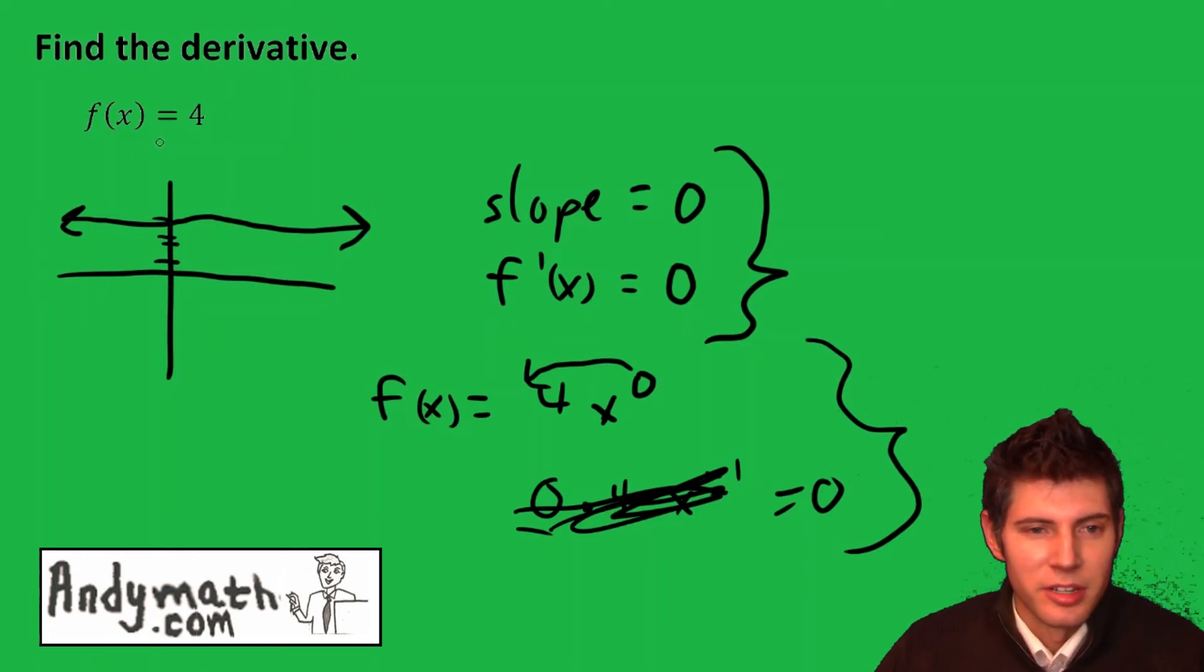The other thing to remember is that the derivative of a constant is always 0. So these are the reasons why.